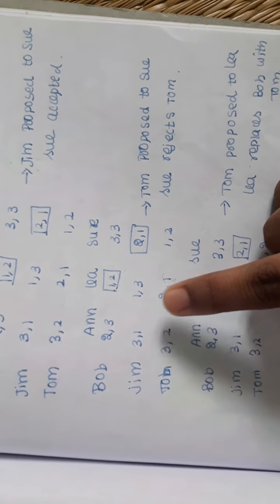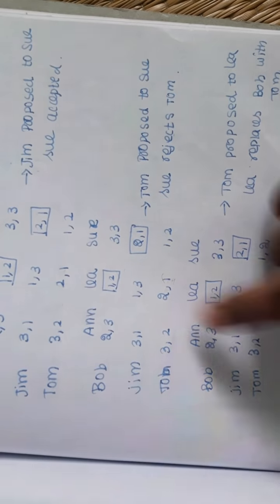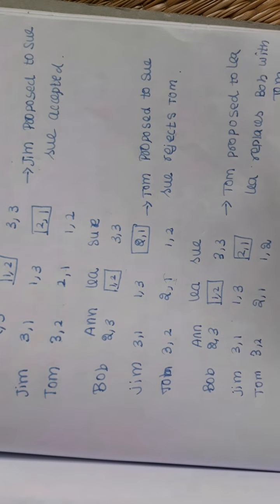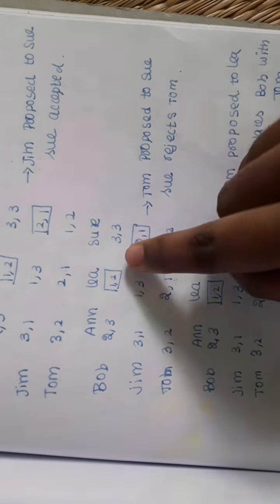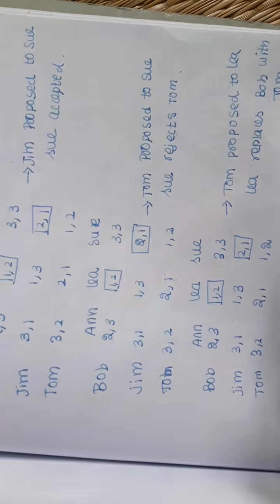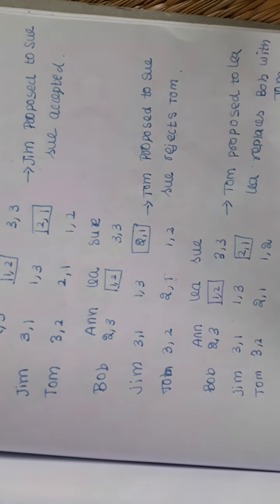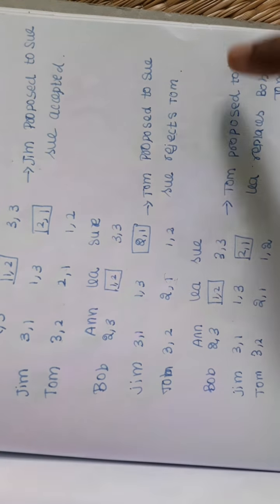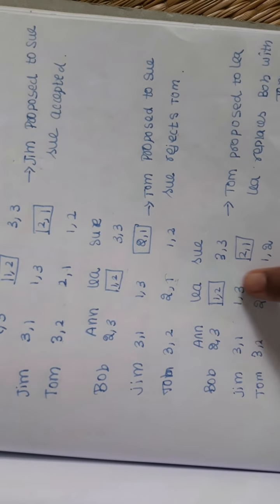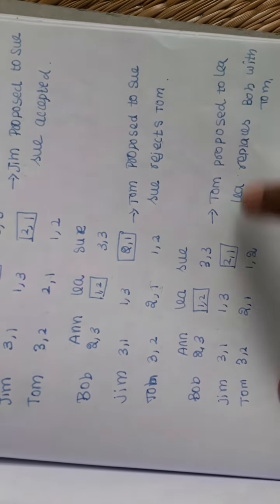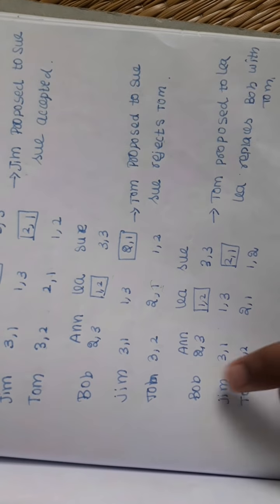And this is Alina. Who is the second place? We are at Lee. So what is Lee doing? Tom will accept. Why? Bob is second priority but Tom is first priority for Lee. So Lee will replace Bob with Tom.